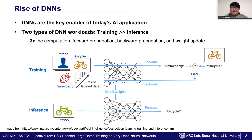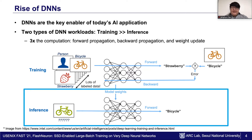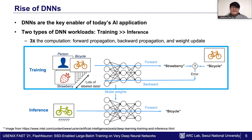DNN workloads are categorized into training and inference. Let's take image classification as an example. For inference, an input image takes a forward pass through the DNN to make a prediction, like bicycle in this example. In contrast, training takes at least three times more computation per input, as it consists of three steps: forward propagation, backward propagation, and weight update. This process is repeated until we achieve a desired prediction accuracy.